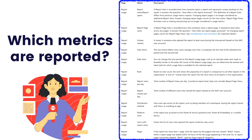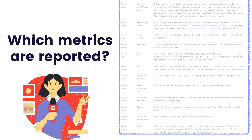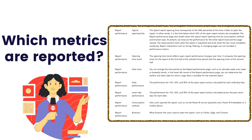There are two kinds of pages available: the Report page and the Performance page. Under the Report Usage page the metrics include report views and report opens. For the Report Performance page, the metrics include typical opening time, opening time trend, date slicer, daily performance, 70th percentile performance, consumption method, and browser.